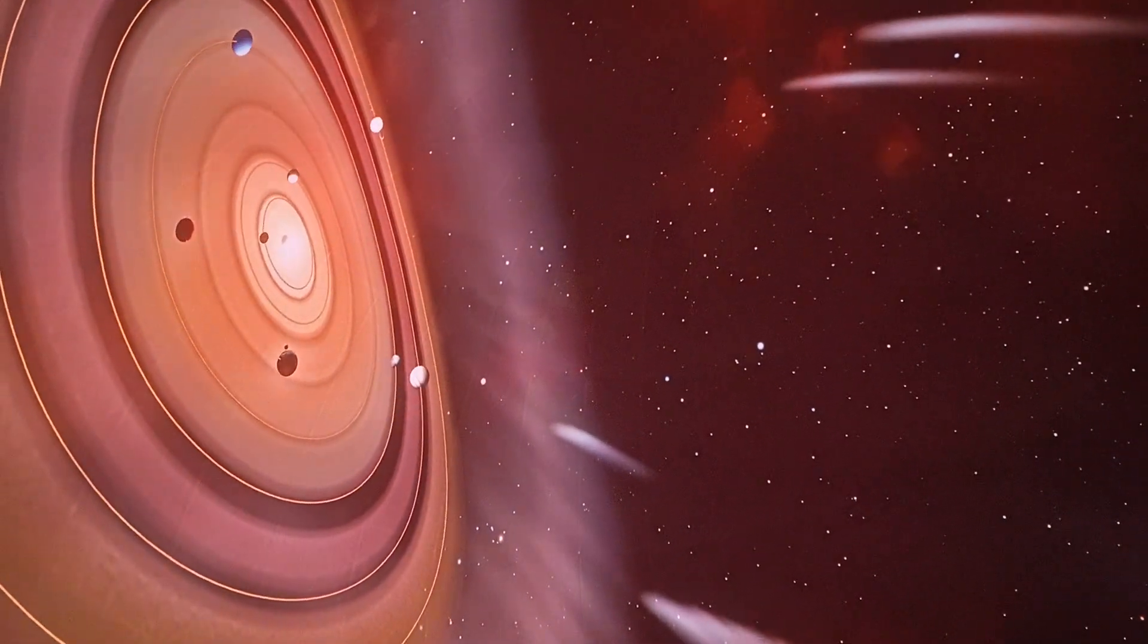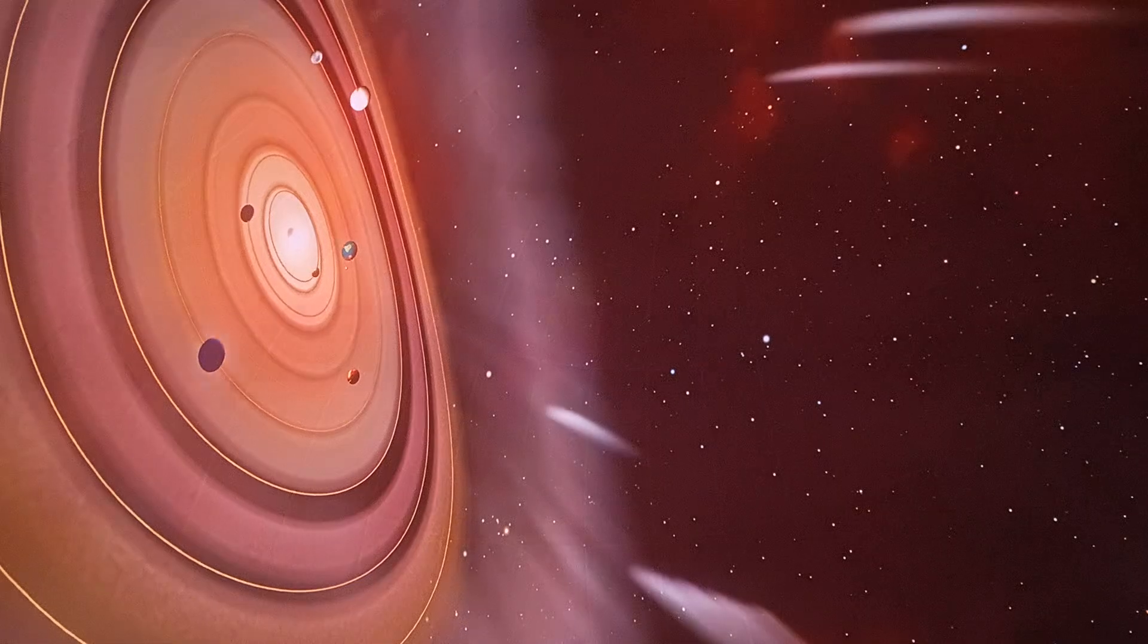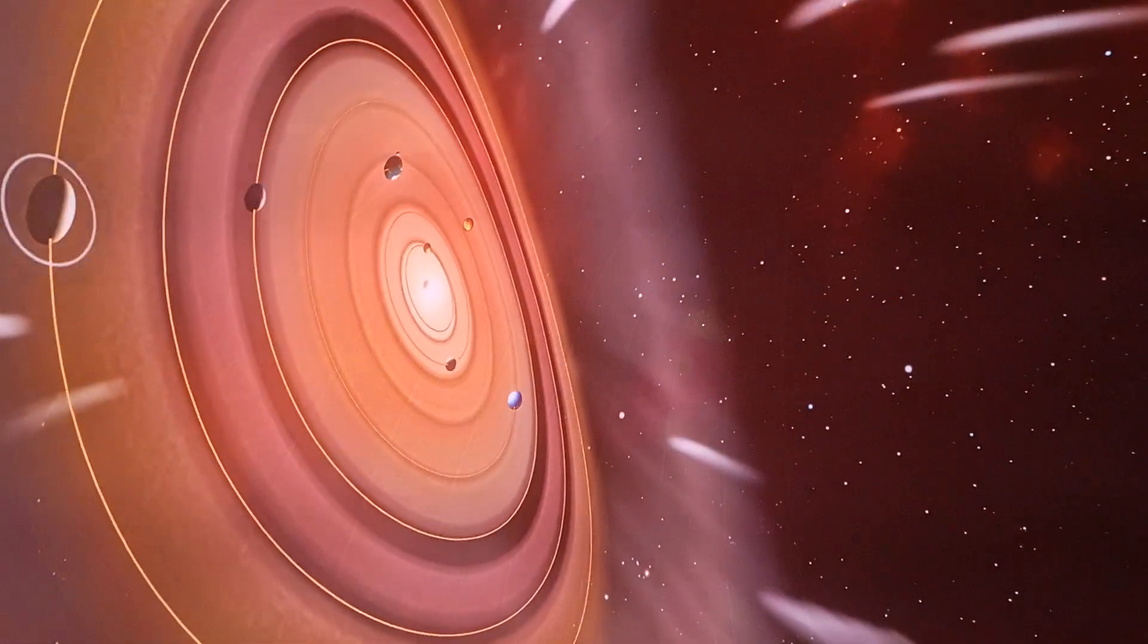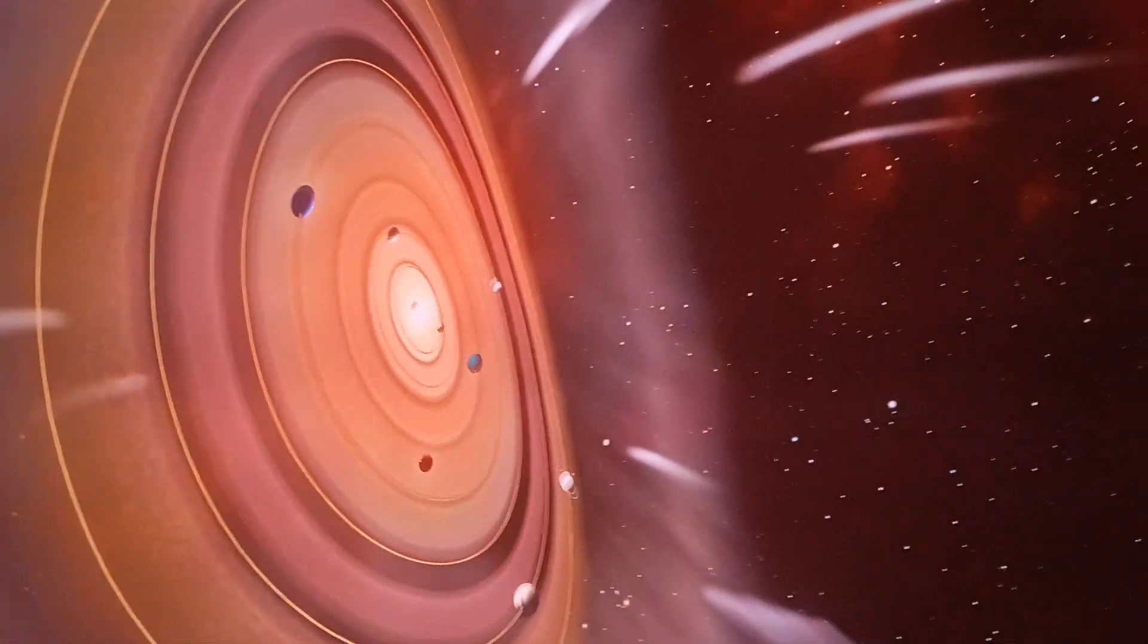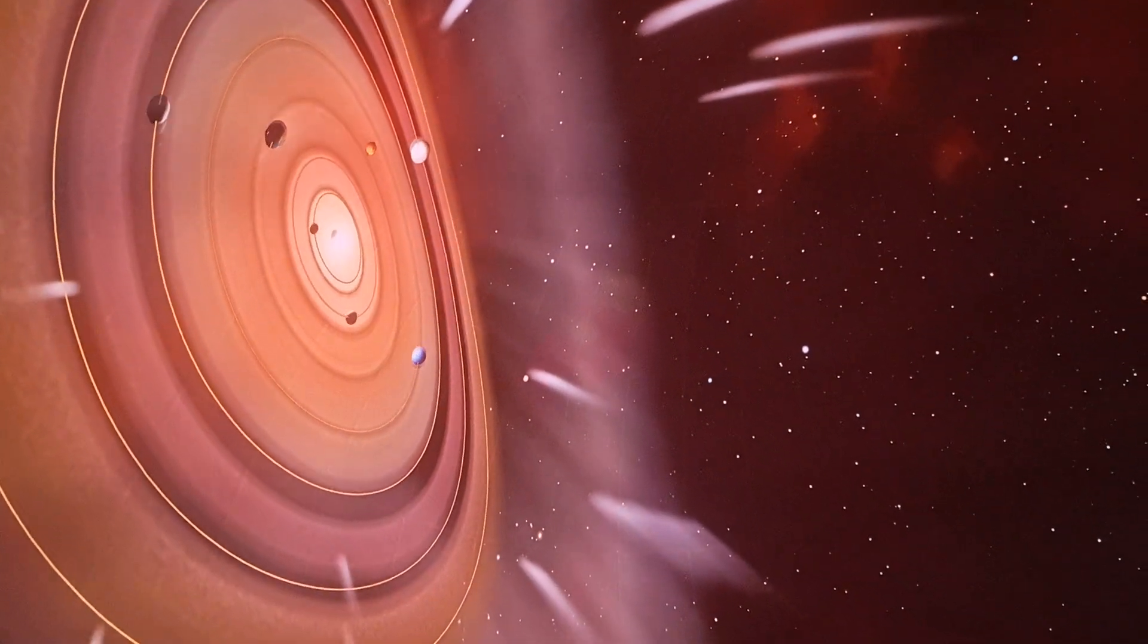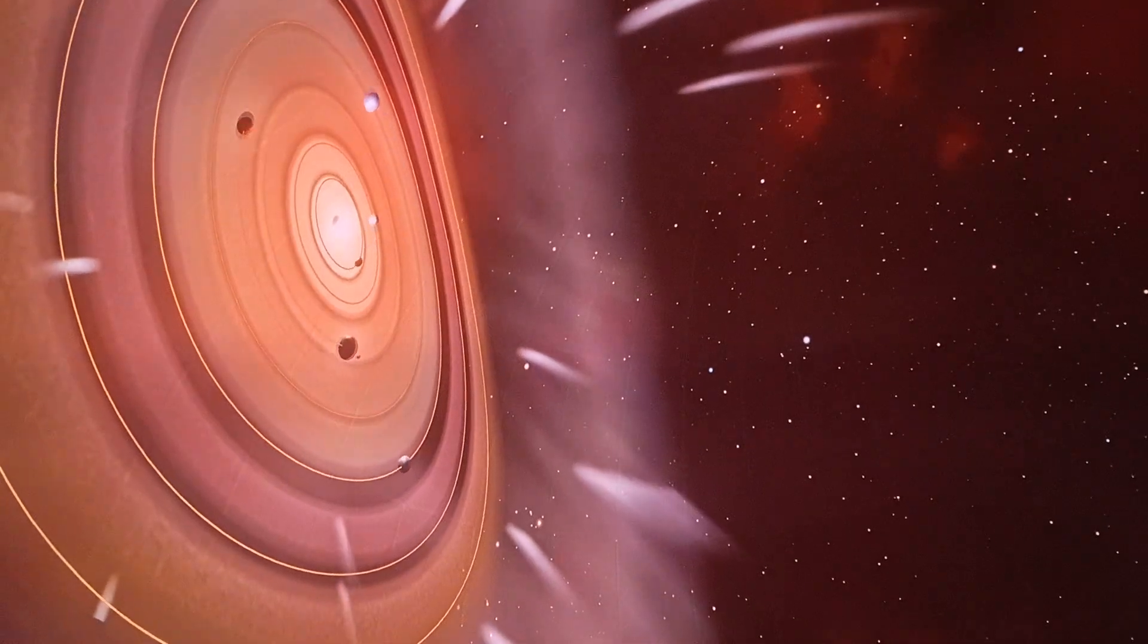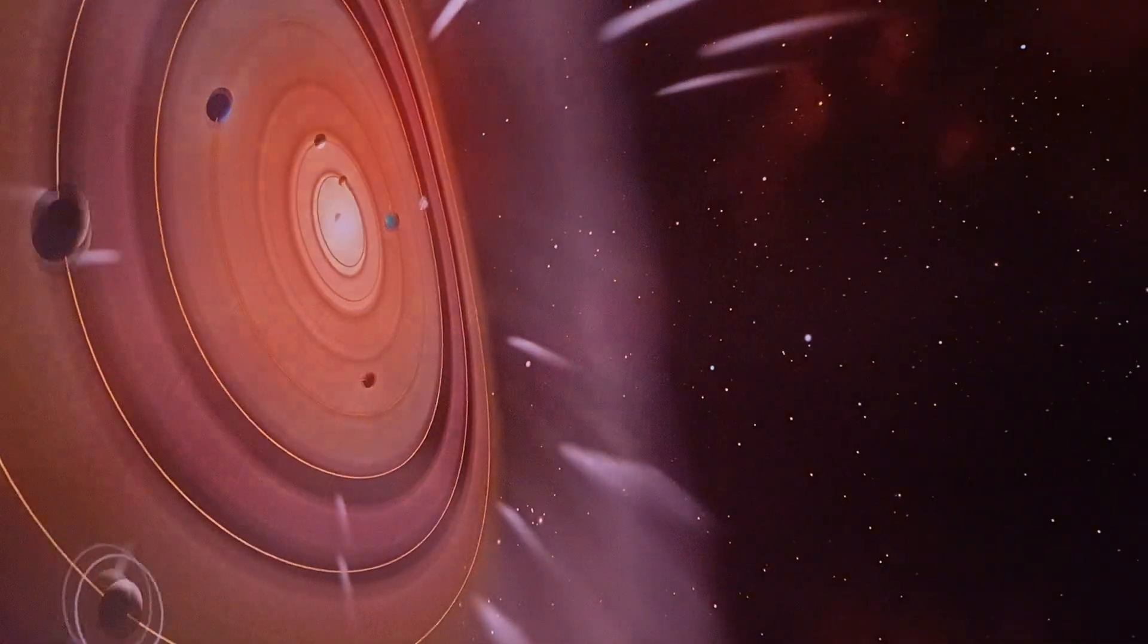Most of the gas and dust in the cloud went to form the Sun, and a small amount collected to form rings and debris around it. Most of the material in the rings then coalesced to form planets.